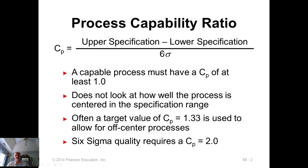For a process to be capable, if this ratio is one, then you normally won't consider the process to be capable, because that's barely meeting the requirement. You want some tolerance — a cushion. So a target value that is normally used is 1.33; that is the minimum standard required. If you want a superior standard, a six sigma quality, then you need to achieve two for this ratio.